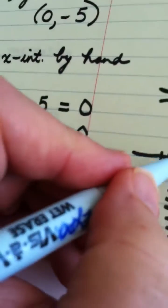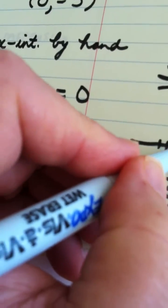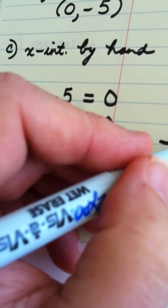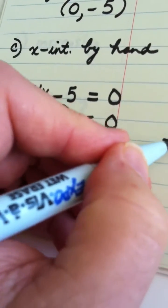My one of my x-intercepts is 1, 0 right there and the other is negative 5, 0. Negative 1 2 3 4 5.